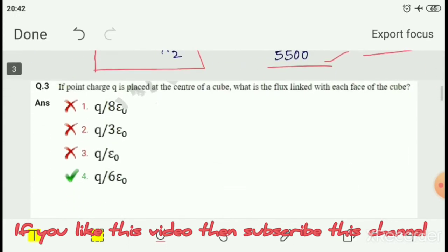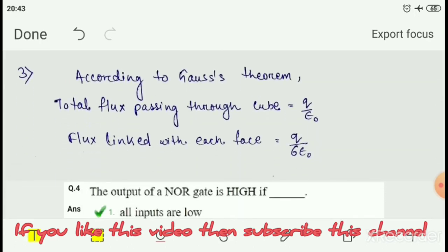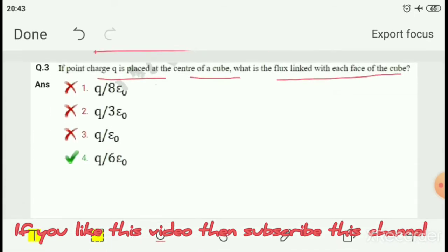Question number 3: If point charge q is placed at the center of a cube, what is the flux linked with each face of the cube? According to Gauss theorem, total flux is q by epsilon naught. Since the cube has six faces, flux linked with each face will be q by 6 epsilon naught, which is option number 4.